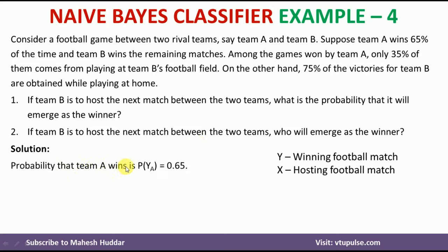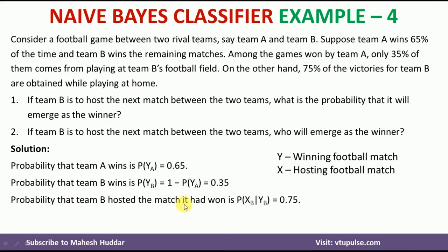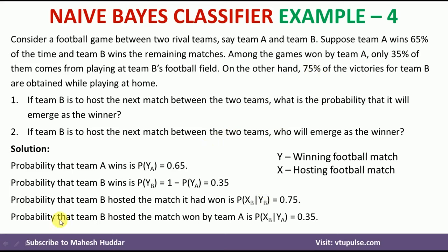The probability that team A wins is P(YA), which is equal to 0.65, that is 65%. The probability that team B wins is P(YB), which is equal to 1 minus P(YA), which is 0.35. The probability that team B hosted the match and won is P(XB | YB), which is 75%. One more value is given: the probability that B hosted the match and A won it, that is P(XB | YA), which is equivalent to 35%.